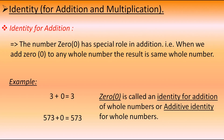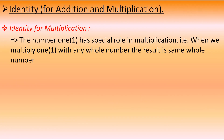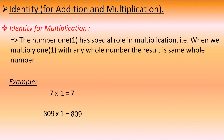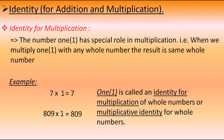Now let's move to identity for multiplication. The number 1 has a special role in multiplication — when we multiply 1 with any whole number, the result is the same whole number. For example, 7 multiplied by 1 equals 7, and 809 multiplied by 1 equals 809. Therefore, 1 is called the identity for multiplication of whole numbers, or the multiplicative identity for whole numbers. Here, all the properties of whole numbers end.